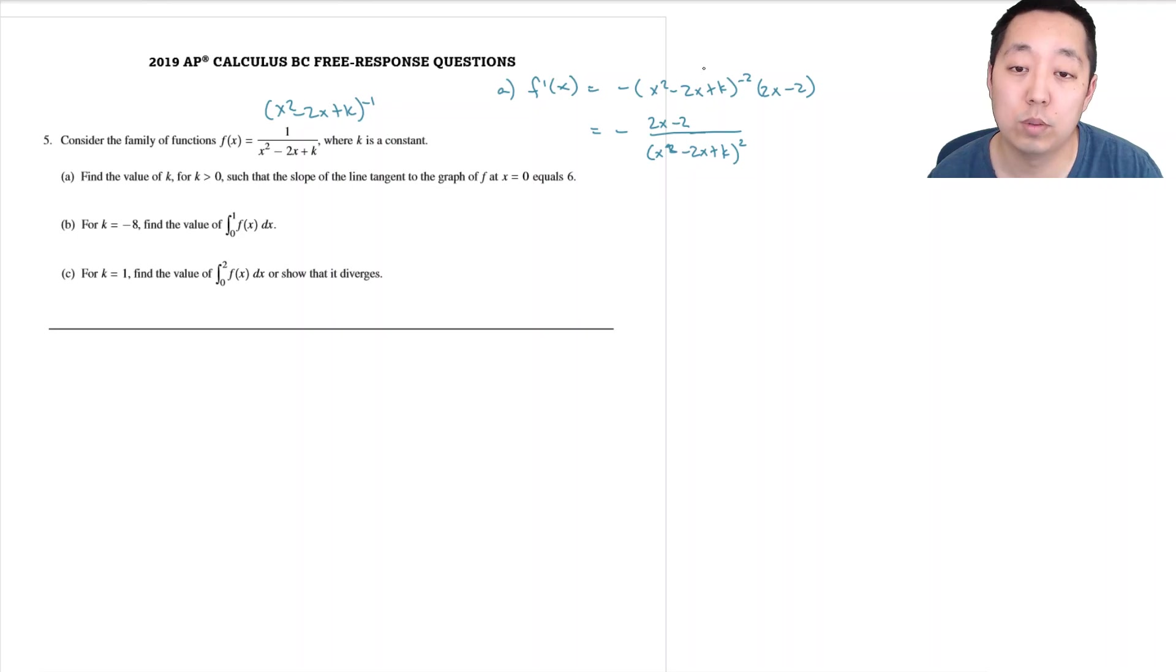So then this is going to be negative (2x minus 2) over (x squared minus 2x plus k) squared. Hopefully that made sense - this is a power rule and then chain rule derivative of the inside here.